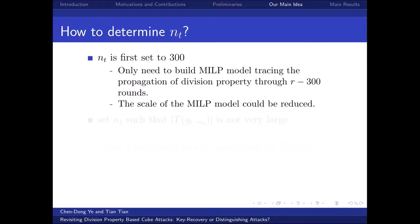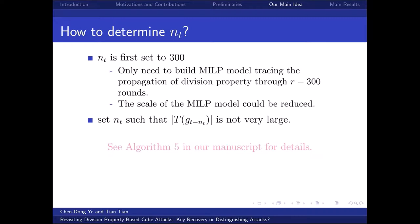Another issue is how to determine nt. In the first iteration, nt is set to 300. Hence, it only needs to build MILP models tracing the propagation of division properties through r minus 300 rounds, reducing the scale of MILP models so they can be solved more efficiently. In the next iterations, nt is set to a proper value such that the terms in g_{t-nt} are not too many. The details can be found in Algorithm 5 in our manuscript.